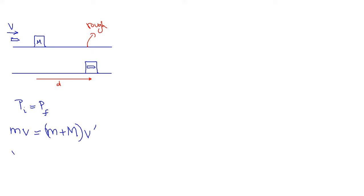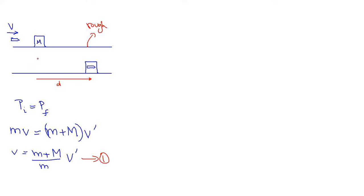We need to find the velocity of the bullet, v. Dividing over by m gives us equation one. Now, how do we get v prime? Right after the bullet gets embedded, they both start with that initial velocity v prime.